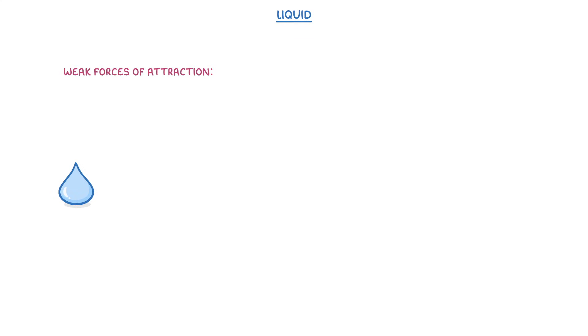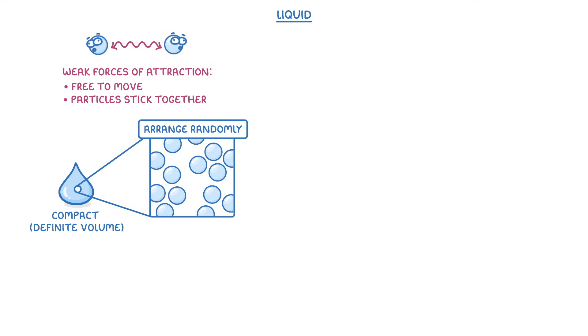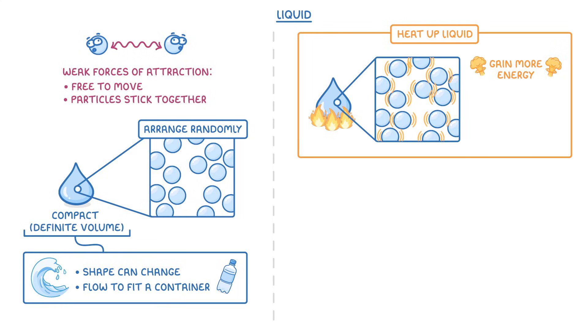In liquids, there are only weak forces of attraction between the particles, so they're free to move around and are arranged pretty randomly. However, the weak forces of attraction do mean that the particles tend to stick together and are fairly compact. This means they have a definite volume even though their overall shape can change, allowing them to flow to fit a particular container.